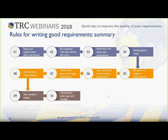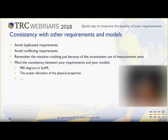Tip ten: consistency with regards to requirements themselves and with regards to models. A clear example is the famous NASA case where different measurement units were conflicting and the result was the system crashing or not being in the proper orbit because of an issue between Newtons and pounds in measuring force. Avoid duplicate requirements, avoid conflicting requirements, and mind the consistency between your requirements and your PBS in a SysML or the property allocation if you have properties in a SysML diagram.